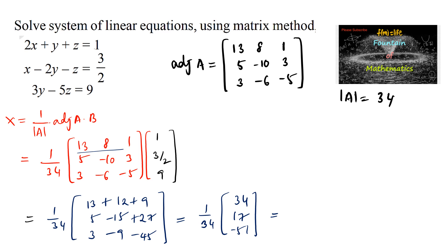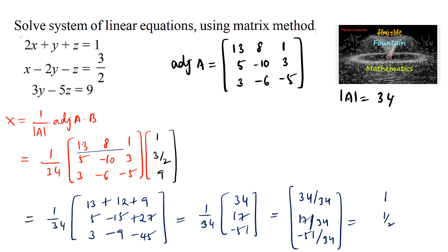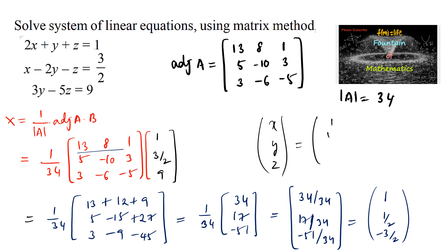Simplifying: 34/34 = 1, 17/34 = 1/2, and −51/34 = −3/2. So the variable matrix [x; y; z] = [1; 1/2; −3/2]. Hence the solution for the given system is x = 1, y = 1/2, and z = −3/2.